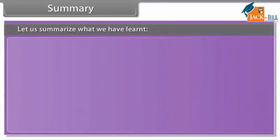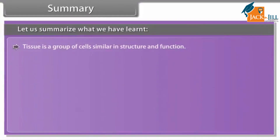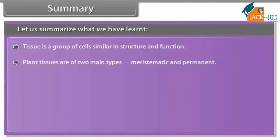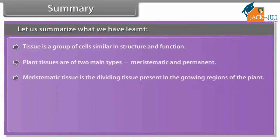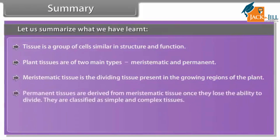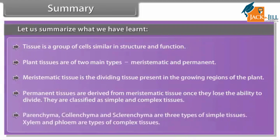Let us summarize what we have learned. Tissue is a group of cells similar in structure and function. Plant tissues are of two main types: meristematic and permanent. Meristematic tissue is the dividing tissue present in the growing regions of the plant. Permanent tissues are derived from meristematic tissue once they lose the ability to divide — they are classified as simple and complex tissues. Parenchyma, collenchyma and sclerenchyma are three types of simple tissues. Xylem and phloem are types of complex tissues.